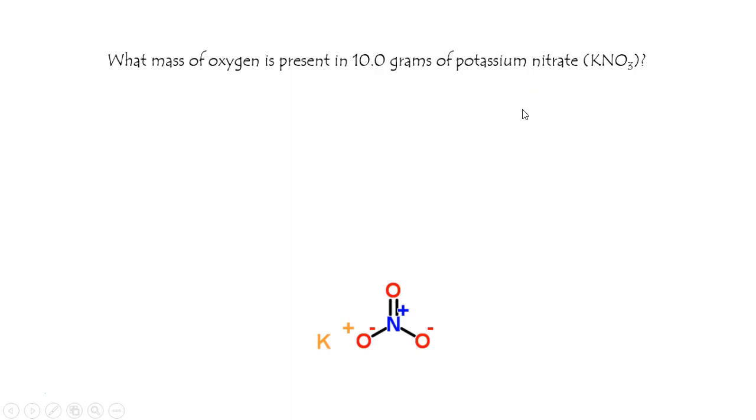Don't bother converting it to a percent, just write it just like it is. You can convert from grams of KNO3 to grams of oxygen. Here it is shown.